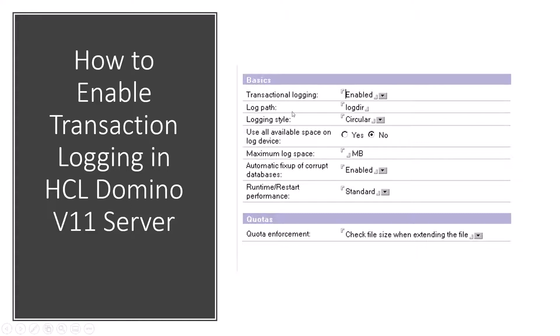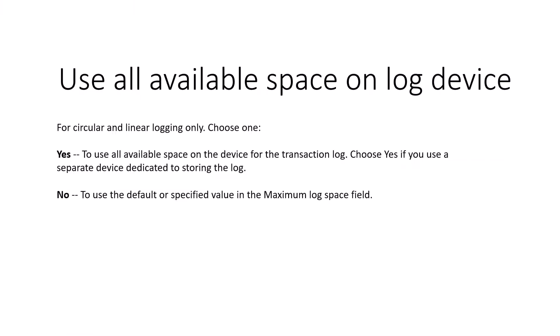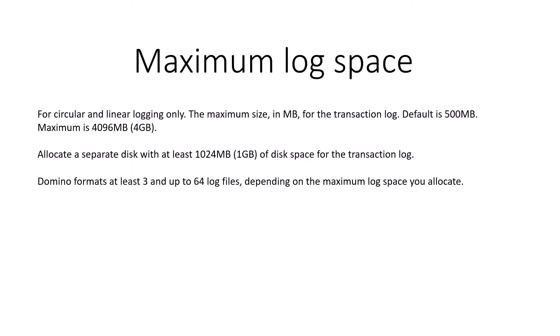The second is the logging path, and third is transaction logging style. Use all available space on the log device, maximum log space, and automatic fixup of corrupt database at runtime, restart performance, and quota enforcement. All available space on the log device is for circular and linear logging only.